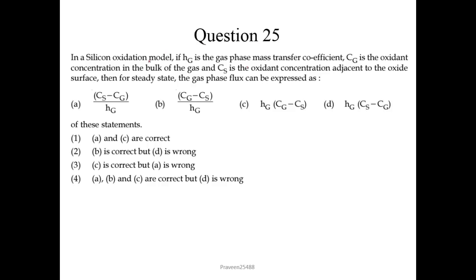Question 25: in a silicon oxidation model, if Hg is the gas phase mass transfer coefficient, Cg is the oxidant concentration in the bulk of the gas, and Cs is the oxidant concentration adjacent to the oxide surface, then for steady state the gas phase flux can be expressed as Hg·(Cg − Cs). So option C is correct. Looking at the options, A and C are given as correct but A is wrong, so the third option is correct.